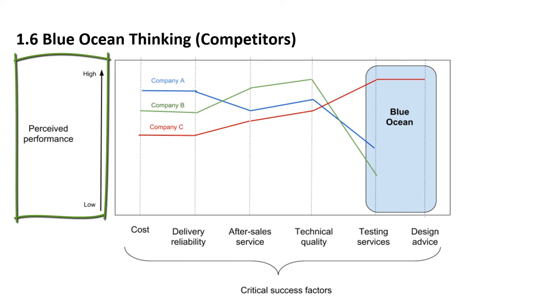Now, the vertical axis represents how much customers perceive the performance of our firm and other firms when it comes to these critical success factors. We simply put our performance, assuming we are company C, and the performance of our competitors.